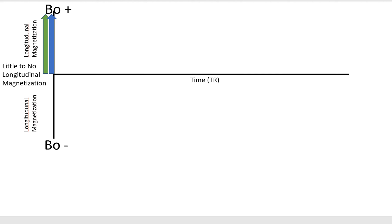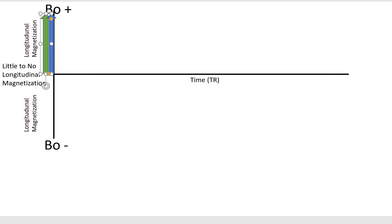When a patient is first placed in the magnet, or after a very long TR, we have two tissues — tissue X and tissue Y. Their net magnetization vectors are fully recovered and aligned with B0 positive, the positive longitudinal plane. Complete recovery typically takes approximately five T1 times of a given tissue. By the time the patient is positioned in the magnet, both tissues have complete recovery.